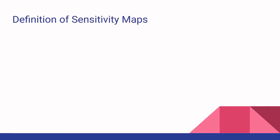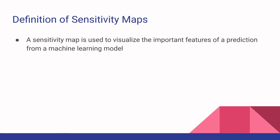So what are sensitivity maps? Basically, they're used to visualize important features for prediction, which is useful for analyzing how a machine learning model does prediction. You work using the class function — the argmax class function — where you have the highest score class C, the set of classes C, and the class activation function.